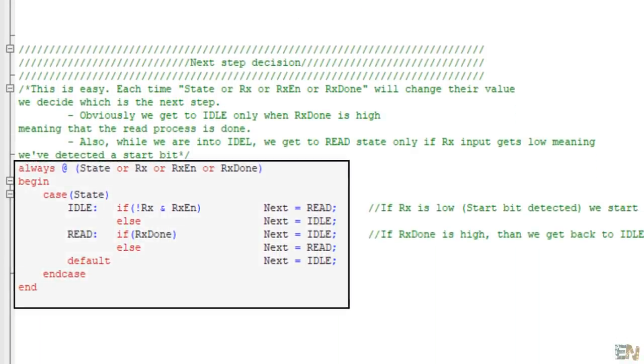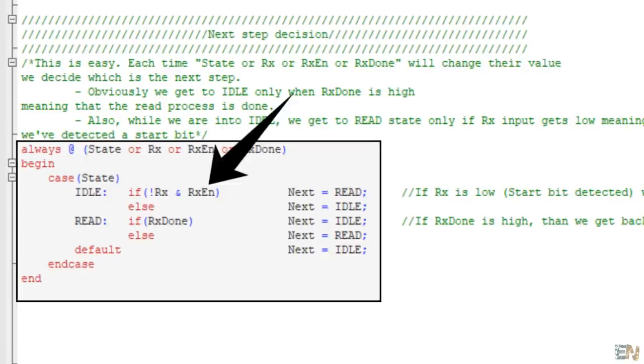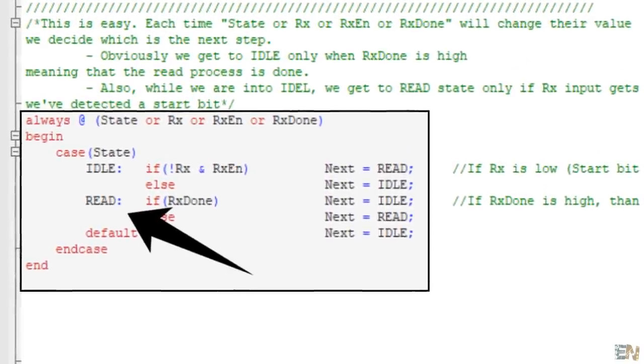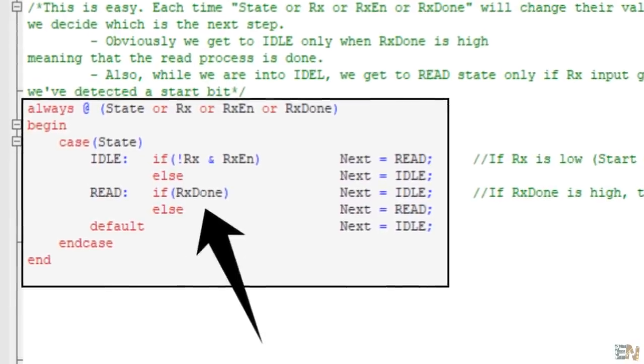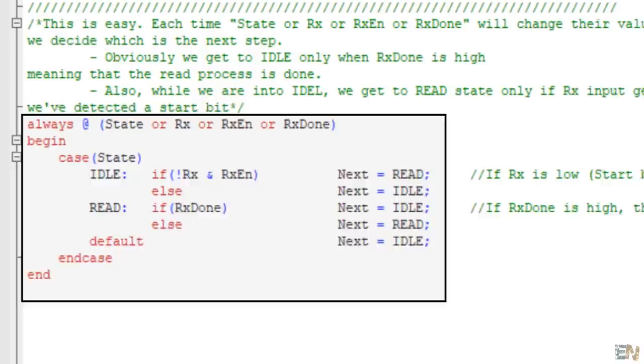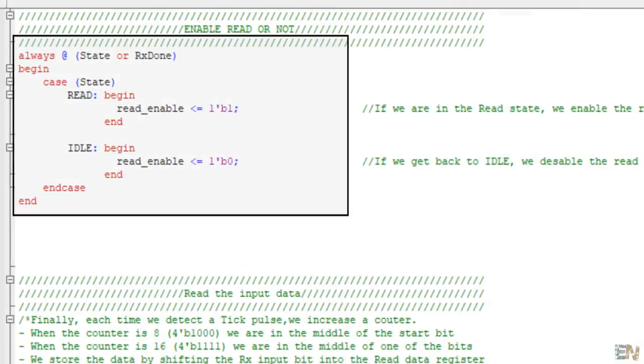Now, we create a state change always. Each time one of these registers will change their values, we decide the next state of our state machine. If we are into idle and the RX enable is high, we get into the read state. If we are into the read state and RX done is high, we go back into idle and wait for the next data. Next part of the code is to tell each state what it will do. The read state will activate the read process and the idle will deactivate that process.